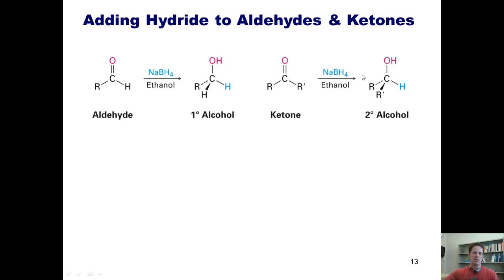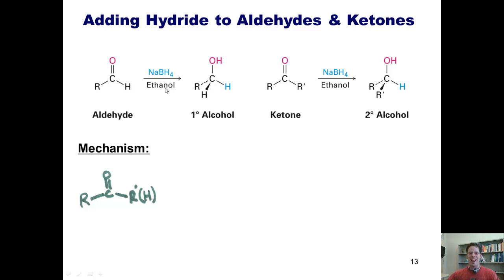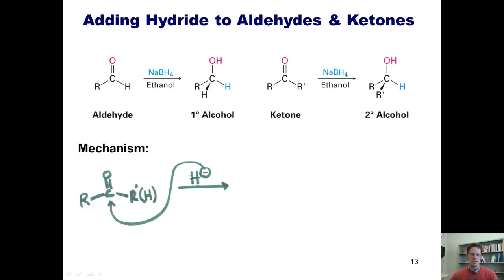What is the mechanism of this reaction? You have to remember that sodium borohydride really is a source of hydride, H minus. So when we take our aldehyde or ketone starting materials and treat them with sodium borohydride, it is like treating them with H minus. This H minus comes into the carbonyl carbon, thrusts the electrons up onto the oxygen, and gives us a tetrahedral intermediate.